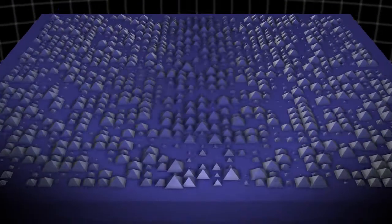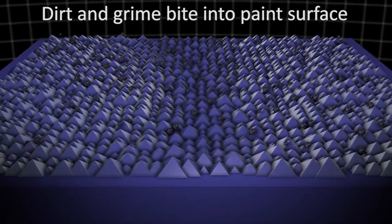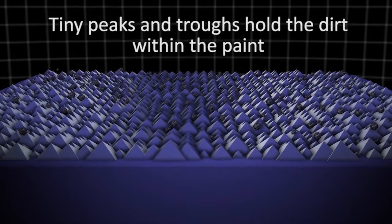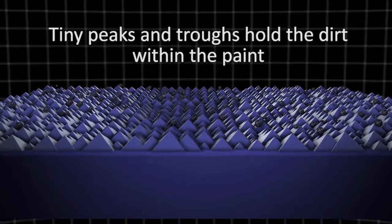Let's take a closer look at the unprotected paint surface. Everyday dirt and grime become embedded into the paint surface. This is due to tiny peaks and troughs within the paint.